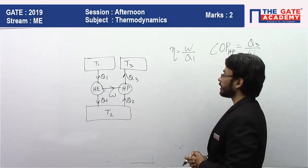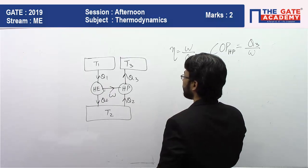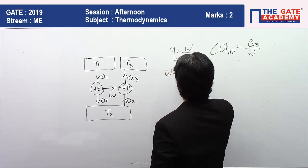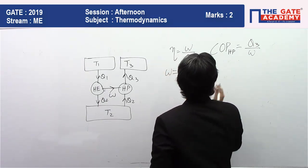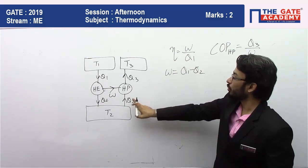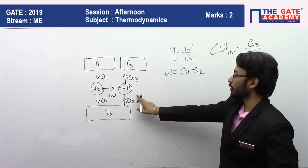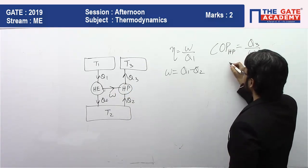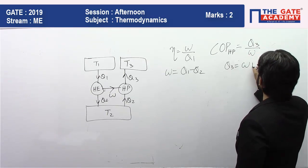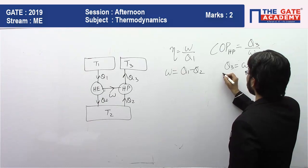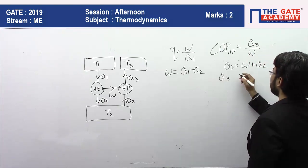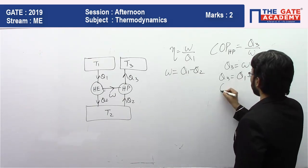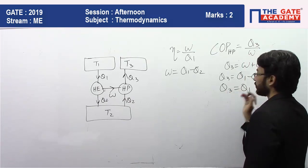First law of thermodynamics, basically energy conservation. We know energy conservation: work is equal to Q1 minus Q2. So Q2 plus work is equal to Q3. We can write work definition here. So we can write Q3 is equal to work plus Q2. We can write Q1 minus Q2 plus Q2. So Q3 will be same as Q1.